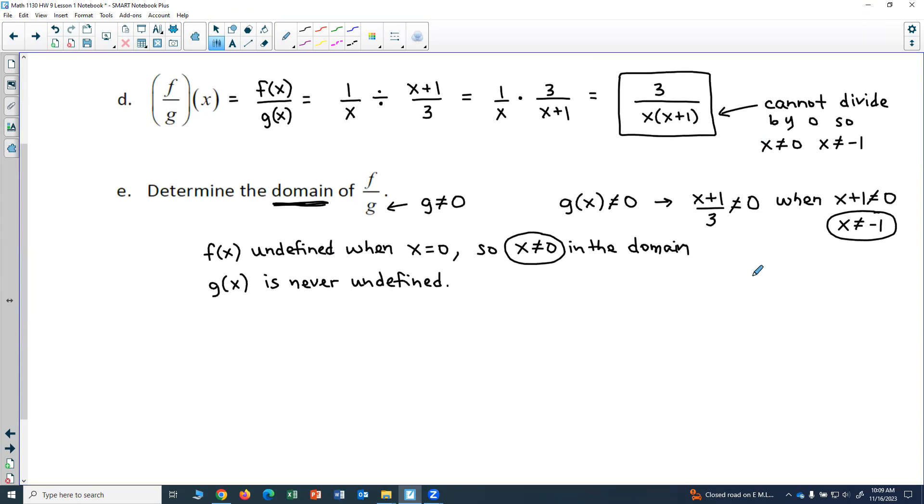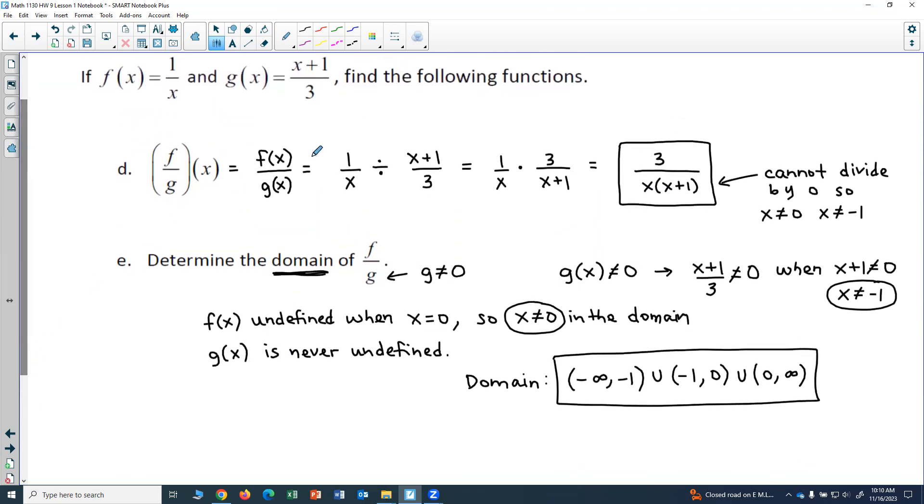So we've got our restrictions on the domain. X cannot equal negative 1 and x cannot equal 0. So our final answer for the domain, we want to list it in interval notation. We'll have negative infinity to negative 1. And I have to use parentheses to exclude those endpoints. Don't forget the interval from negative 1 to 0 and then the interval from 0 to infinity. So that would be my domain of f over g. But notice it wasn't just as simple as looking at the final result of f over g. I also had to look back at my original g of x and make sure that does not equal 0. And make sure that I've accounted for all the x values that would make f or g undefined.